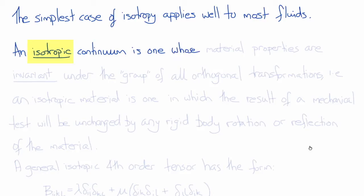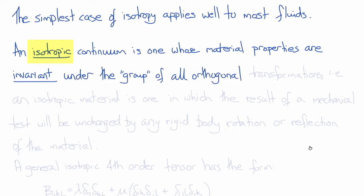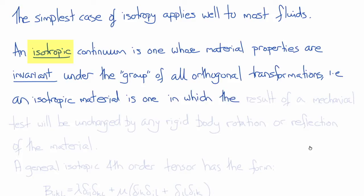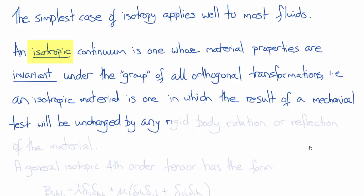An isotropic continuum is one whose material properties are invariant under the group of all orthogonal transformations. In other words, an isotropic material is one in which the result of a specific mechanical test would be unchanged by any rigid body rotation or reflection of the material. Put more simply, the properties don't depend on which direction you test the material. It's easy to think of solid materials where this is not the case — think of a piece of wood where along its grain a property would be different than against its grain — but it's very hard to think of a fluid that would have this anisotropic property. In fact, it can be proven that for true fluids, the only possible material symmetry is isotropy.